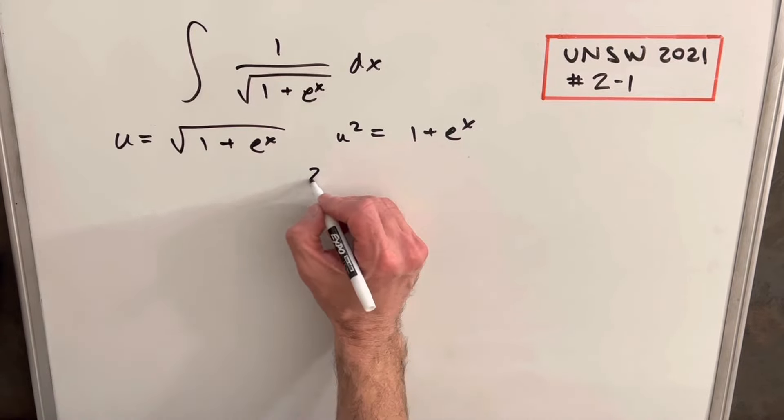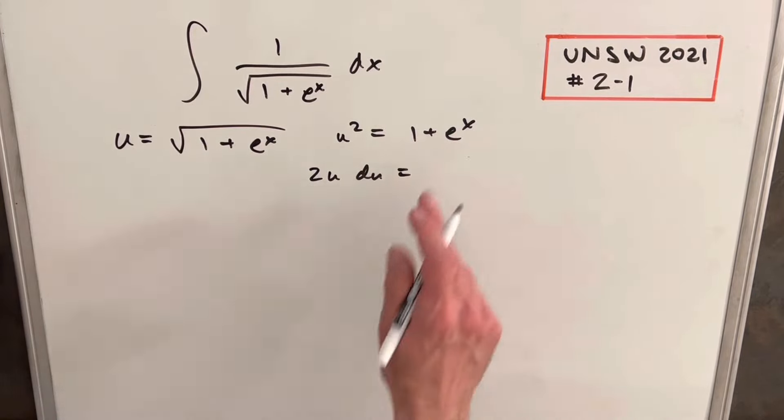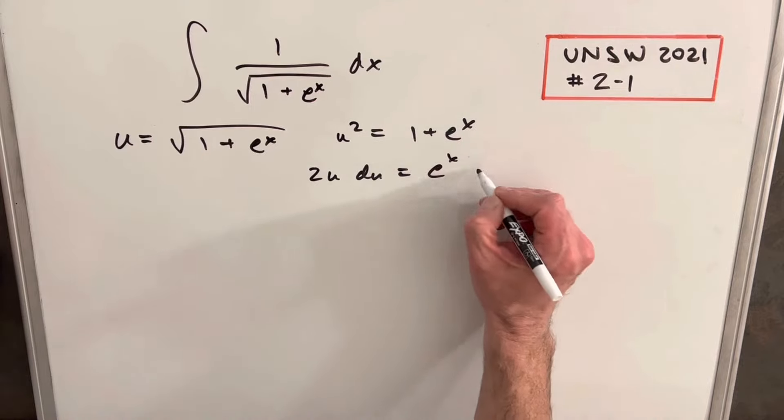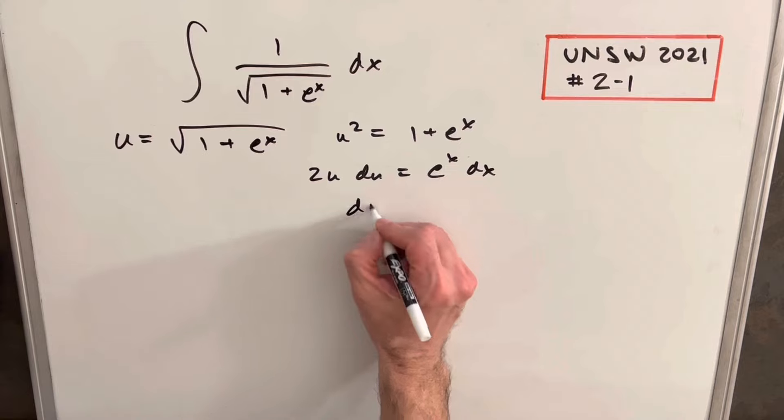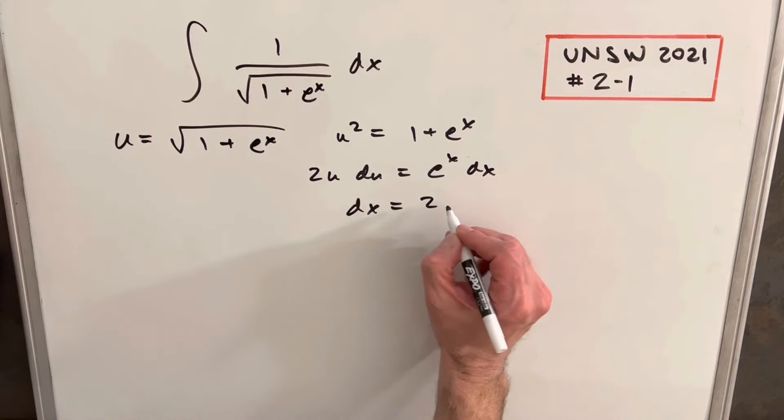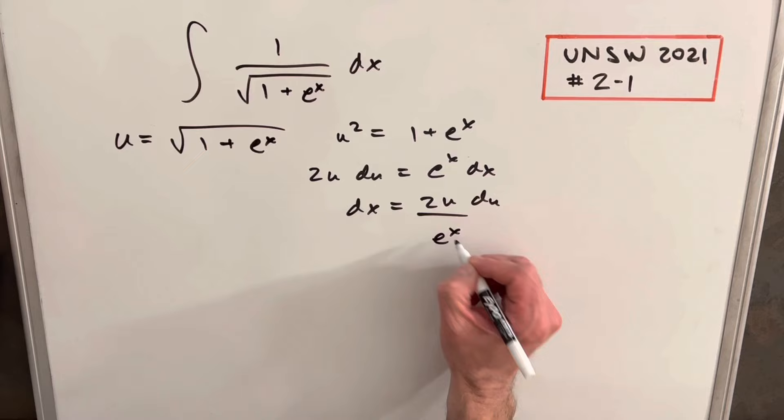Taking the derivative, we have 2u du equals e to the x dx. Solving for dx, we get dx equals 2u du over e to the x.